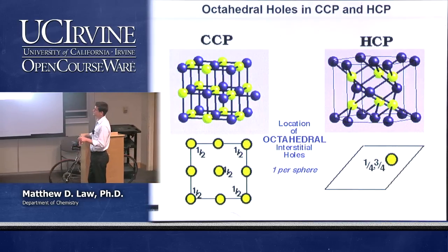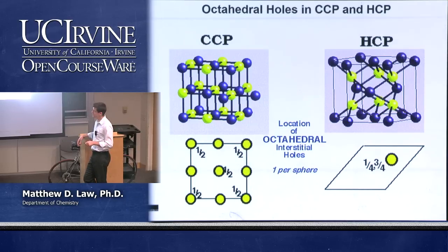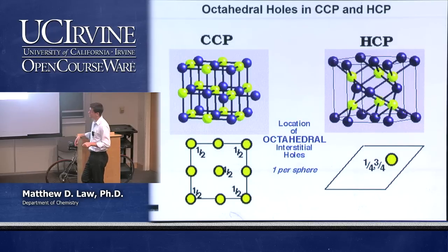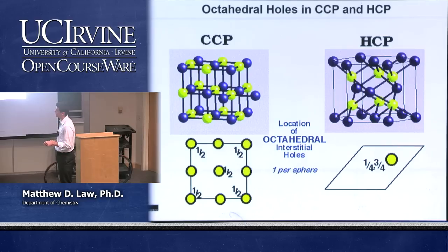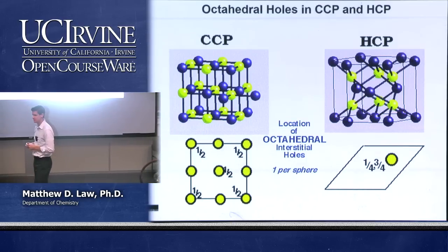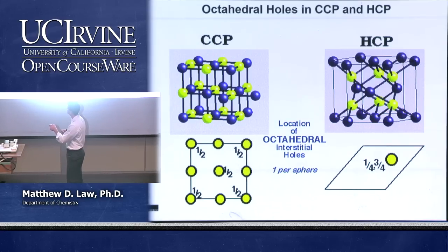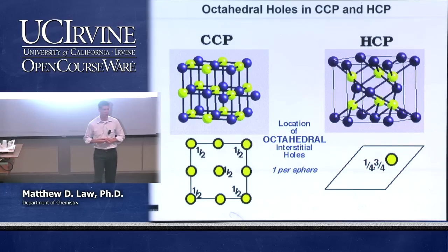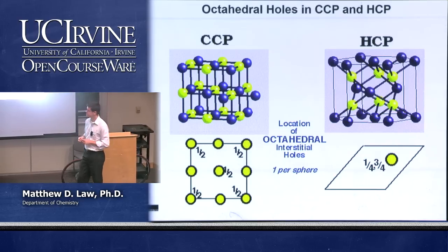This is confirmed by the plan view diagram — a 2D projection looking down one face of the cube, with fractional unit cell coordinates indicating where the holes are. A label of ½ means the hole is halfway up in the unit cell; no label means the hole occurs at both the zero and one unit-cell positions. Plan view diagrams are a convenient way to visualize where everything is without drawing the full 3D structure.